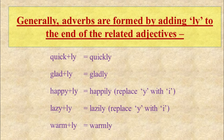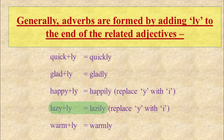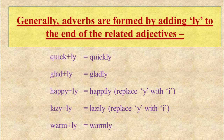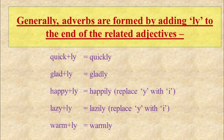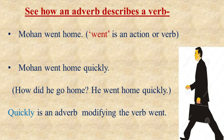For example: quick → quickly, glad → gladly, happy → happily, lazy → lazily, warm → warmly. Here we can notice that the words happy and lazy are ending with the letter Y. We will replace the letter Y with the letter I while forming an adverb. As we have already discussed, an adverb modifies a verb.